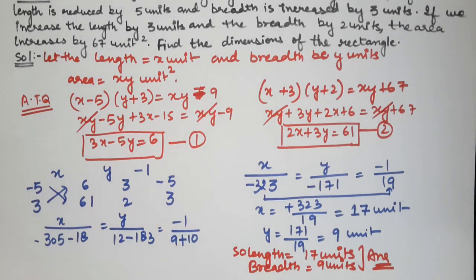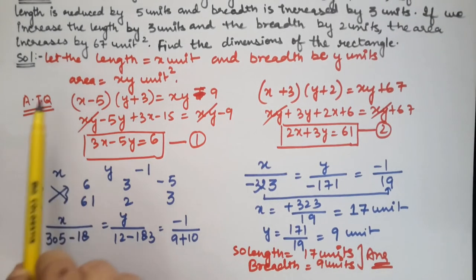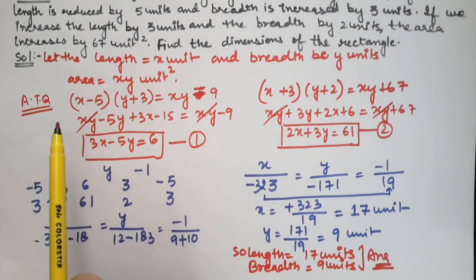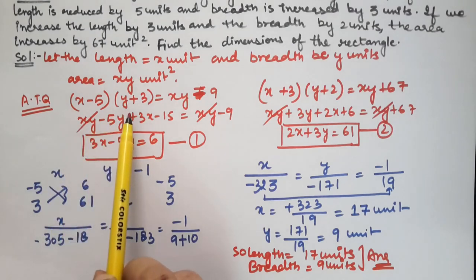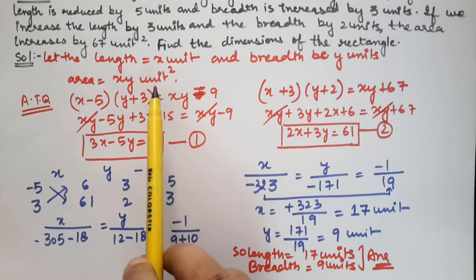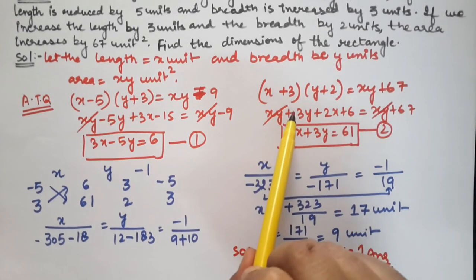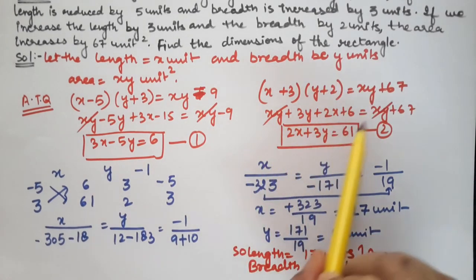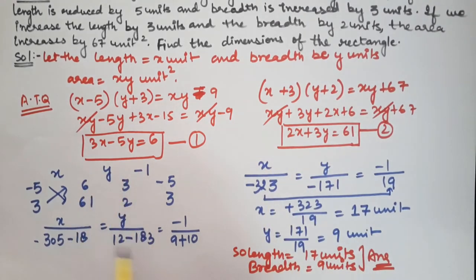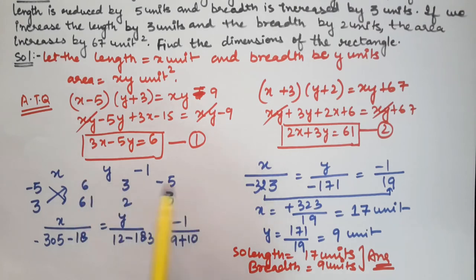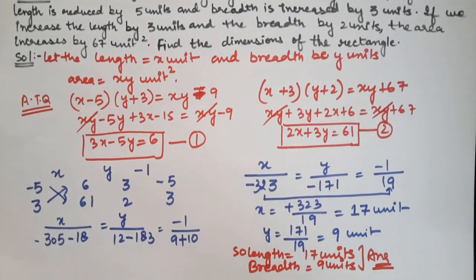They said the area is reduced by 9 if we reduce the length by 5 and increase the breadth by 3 — that gave us Equation 1. For Equation 2, increasing the length by 3 and the breadth by 2 increases the total area by 67. We then applied the cross multiplication method: this times this minus this times this. The answer is straightforward — cross multiplication is actually very simple, we just need to practice it.